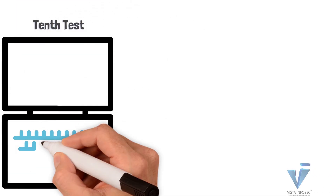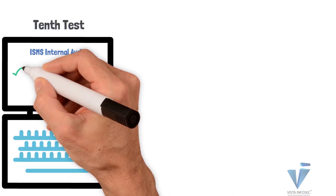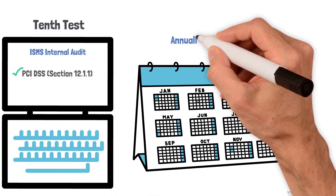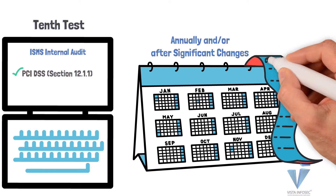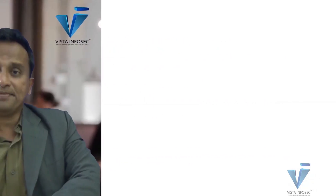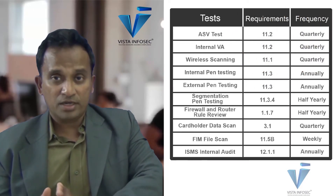The next is an ISMS internal audit, required annually at a minimum under section 12.1.1 of PCI DSS. These are the minimum compliance requirements for PCI DSS. It doesn't mean that if you do only these you're fully done — but these are the minimum requirements that, if missed, could result in a non-conformity.